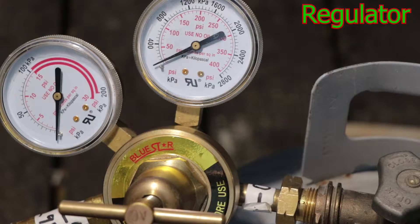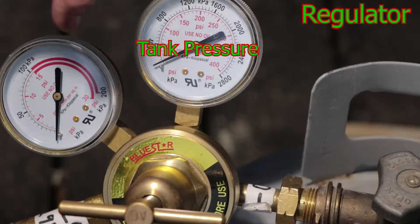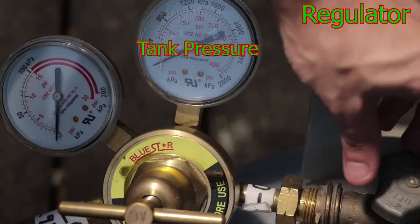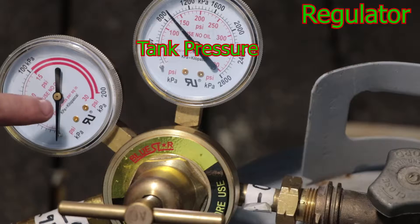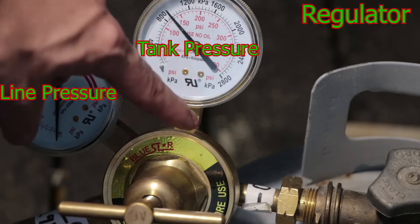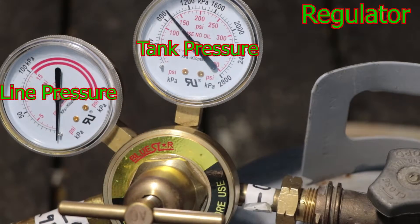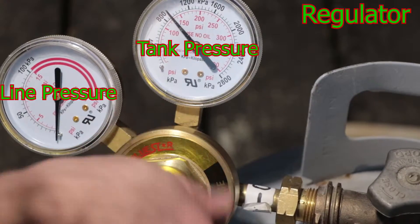And now as I open up the tank you'll see this first gauge increase which will show us the tank pressure. It went up above 800. And then the second gauge will be the line pressure, everything past the regulator. I'll go and turn that on to five.